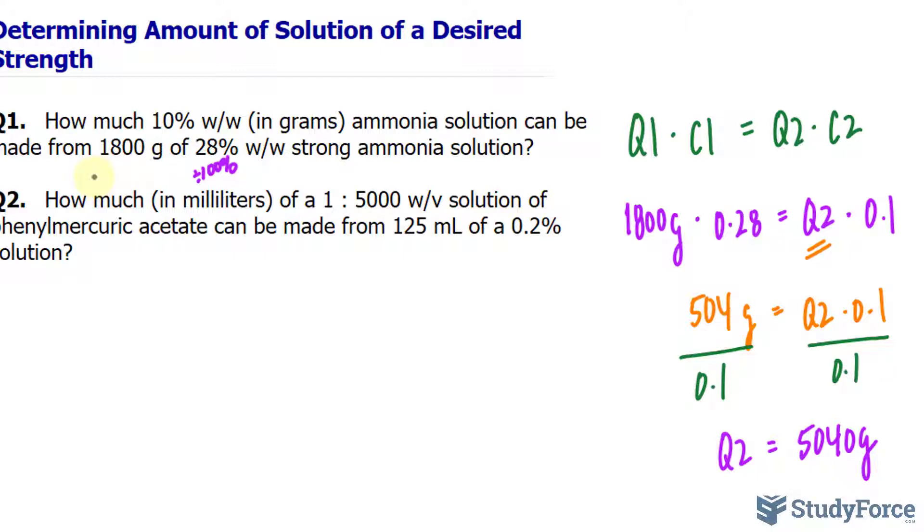That can be done by setting up a fraction. So we know that this solution consists of an active ingredient, the solute, which gets mixed in with the solvent. We don't know the amount of active ingredient, so I'll call it X. But I do know that the entire solution is 1,800 grams. So X amount of active ingredient is found within 1,800 grams of the entire solution.